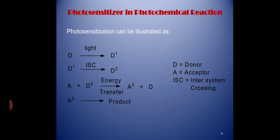You will understand this better with the help of a schematic diagram. D is the donor molecule and A is the acceptor molecule. The donor molecule D absorbs light and goes to the singlet excited state D1, but the singlet excited state is very unstable, so it goes to the triplet state D3, which is a metastable state, by intersystem crossing (ISC). In the triplet state, the donor molecule transfers its energy to the acceptor molecule A. The acceptor molecule then goes to the triplet state A3 and the donor molecule returns to the ground state D. The acceptor molecule A3 is now ready to undergo a photochemical reaction.